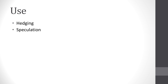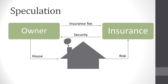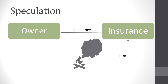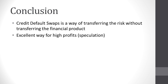Credit default swaps have two major uses. The first, as previously described, is hedging — so to protect from risks. The other use is speculation. Imagine you have a fire insurance, but not for your house, but for your neighbor's house. You will get a lot of money if your neighbor's house burns down, although you do not suffer any damages if it burns down. The same can be done with a credit default swap: if you buy a credit default swap for a credit that you did not grant to anybody, then you speculate on the default of a reference borrower. In conclusion, a credit default swap is a way of transferring the risk of a credit or bond without transferring the financial product itself. Moreover, it is an excellent way of speculation.